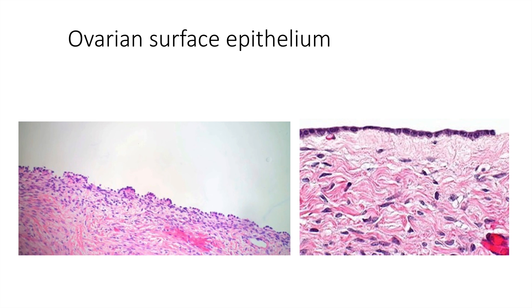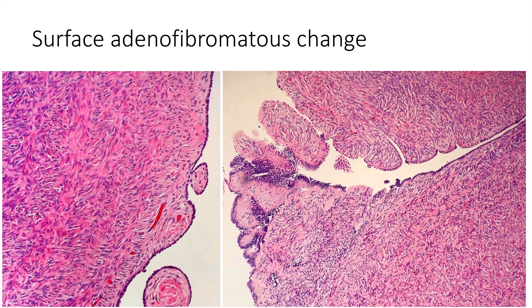These are examples of ovarian surface epithelium, which was thought to be the precursor to epithelial ovarian carcinoma, though this theory has been challenged. Ovarian surface epithelium is a single, focally stratified to cuboidal layer of cells present at the surface of the ovary. It's often denuded in the process of handling and cutting the specimen. Occasionally, the ovarian surface will show benign surface papillations termed surface adenofibromatous change — this is a benign finding, but it may show up in pelvic washings.